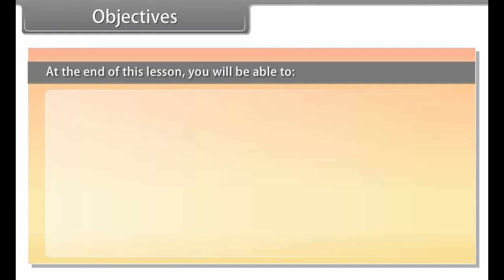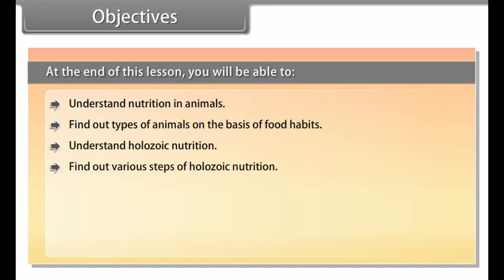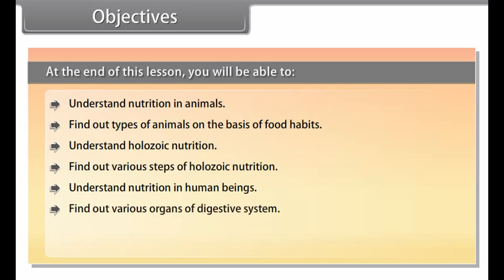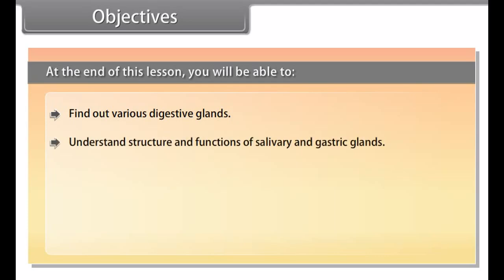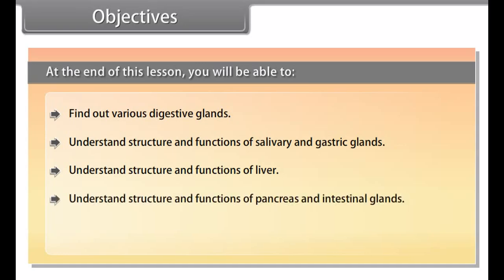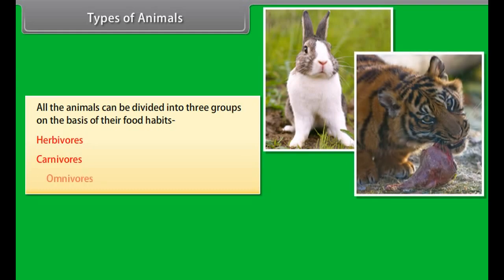At the end of this lesson, you will be able to: understand nutrition in animals; find out types of animals on the basis of food habits; understand holozoic nutrition and its various steps; understand nutrition in human beings; find out various organs of the digestive system; understand the structure and functions of salivary glands, gastric glands, pancreas, and intestinal glands; and study the chemistry of digestive glands.